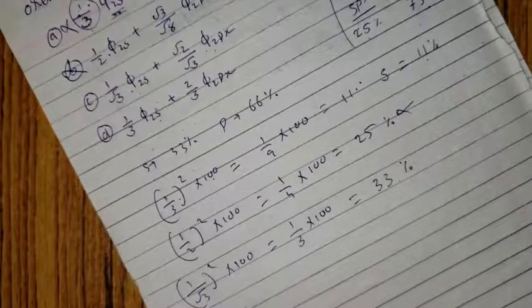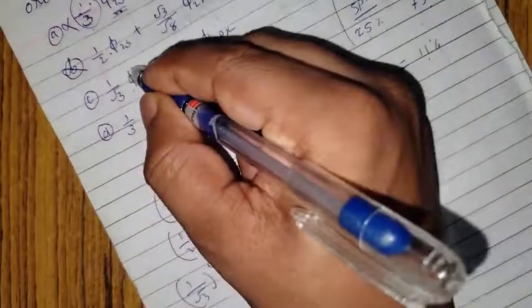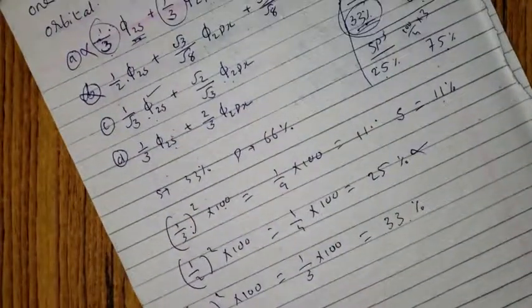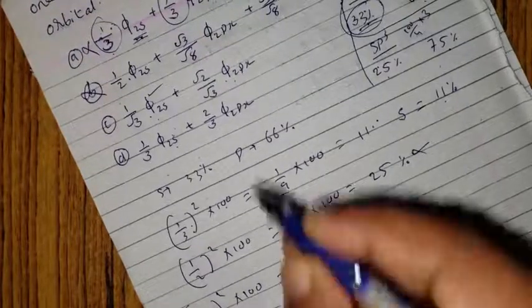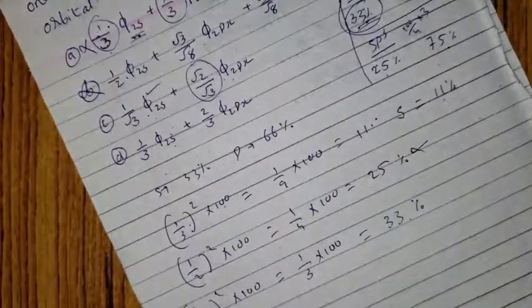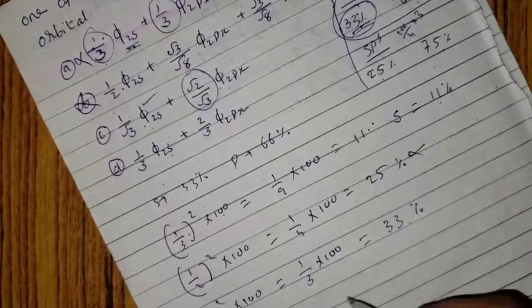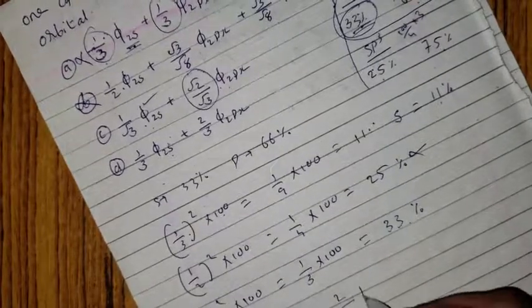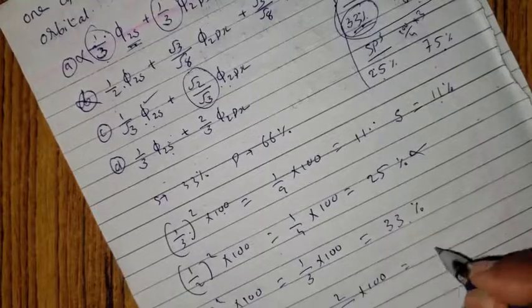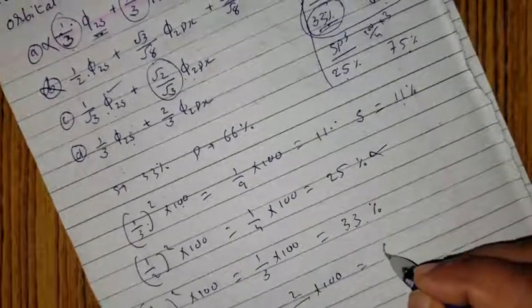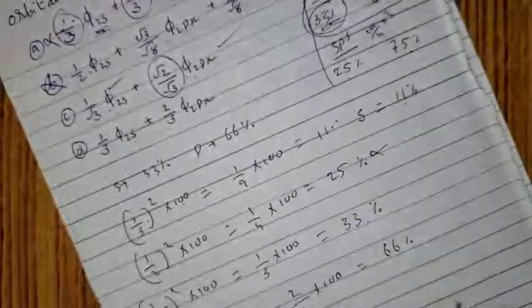P character: S character root 2 by root 3, square into 100, 2 by 3 into 100, yes, 66%. S character coefficient 1 by 3.